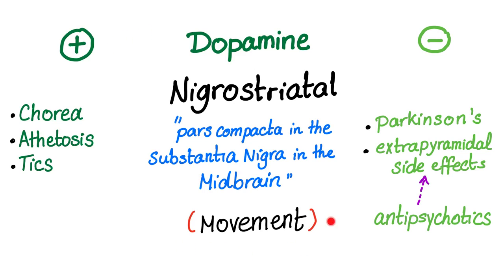More dopamine will lead to more movement; less dopamine, less movement. More movement includes chorea — such as Huntington's disease — athetosis, and tics, as in Tourette's syndrome. Athetosis can be seen in cerebral palsy in kids. Less dopamine, less movement: Parkinson's — everything is slow. Also, extrapyramidal symptoms due to antipsychotics, especially the typical antipsychotics. Why? Because antipsychotics are anti-dopamine — no dopamine leads to less movement.